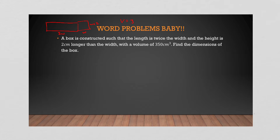The volume you're given is 350, and remember the volume is length times width times height — that's where we get our polynomial from. So our volume equation is: 350 = 2w × w × (w + 2), which gives us 2w³ + 4w² = 350.